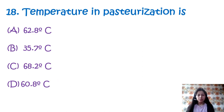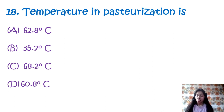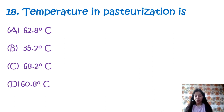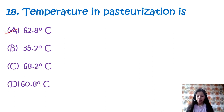Question 18: Temperature in pasteurization is — option A: 62.8°C, option B: 35.7°C, option C: 68.2°C, option D: 60.8°C. Pasteurization has two types: LTLT (low temperature, long time) and HTST (high temperature, short time). LTLT involves heating milk at 65°C for 30 minutes. HTST involves heating milk to 72–74°C for 15 to 20 seconds. The question refers mainly to the LTLT process, so the correct option is A, 62.8°C.